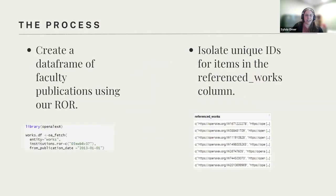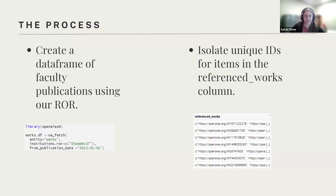To get the process started, I first created a dataset using OpenAlex R to retrieve all works by authors associated with our Research Organization Registry (ROR). I chose to look at a 10-year window rather than all time. I don't have a lot of time to talk about the data cleanup and verification, but I want to say there is some process there — especially for verifying authors. I found a very few instances where faculty from a nearby institution, Penn State Scranton, were mistakenly associated with our ROR number. Once you find things like that, it's easy enough to remove them from your dataset.